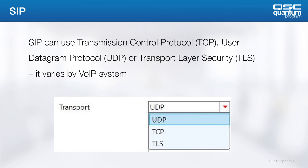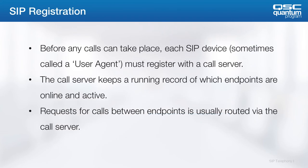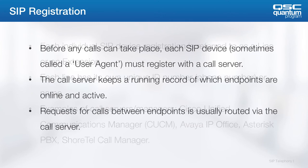SIP uses TCP, UDP, or TLS. UDP and TCP are not secure connections, and TLS encrypts the SIP signals. The proxy or call server is the device that we need to register with, also used to set up or receive calls. It also keeps a record of all the endpoints that it's registered with and routes the call in and out of the proxy.